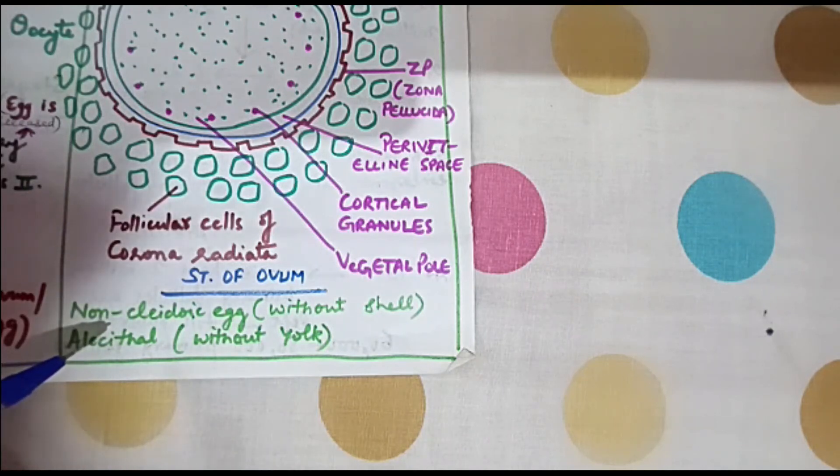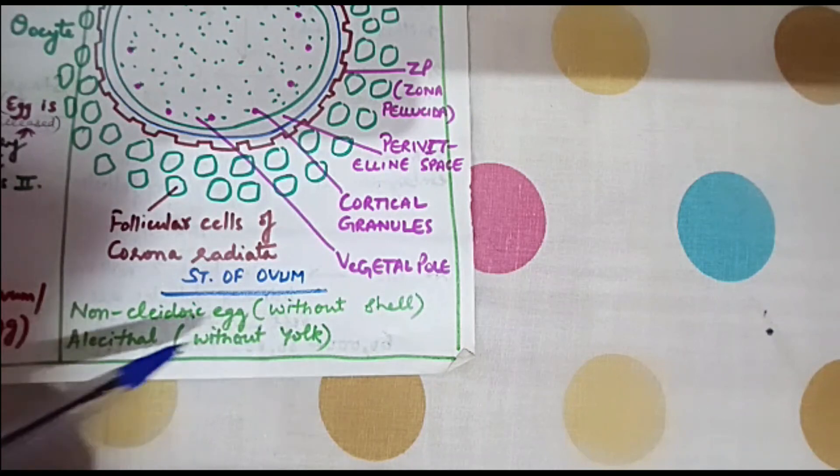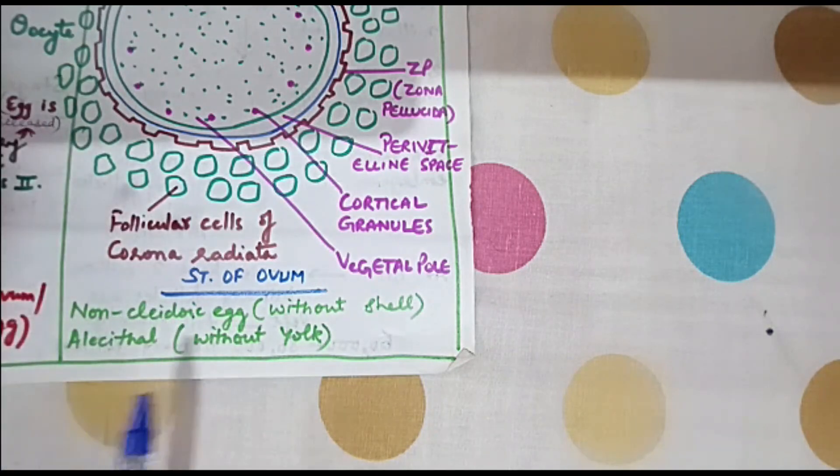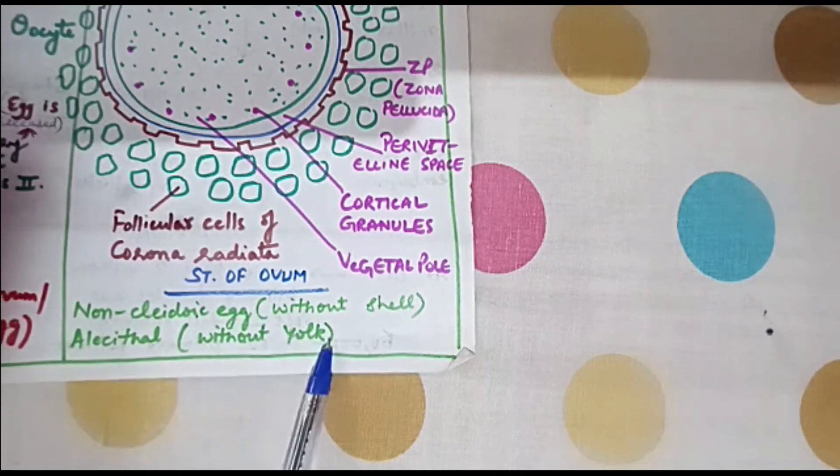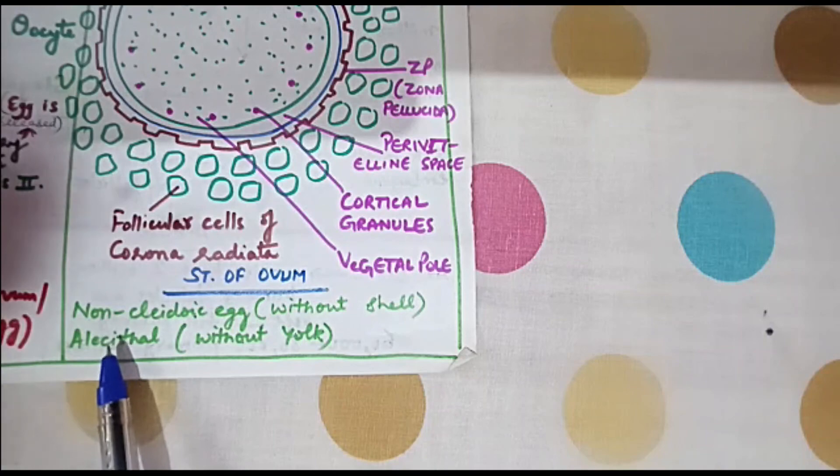Further, if you talk about the yolk content, there is no yolk inside the human egg and the term used here is alecithal. So human egg is without any yolk and it means that human egg or ovum is alecithal.